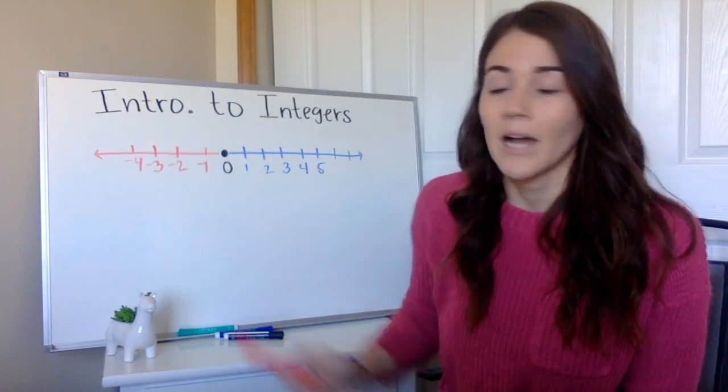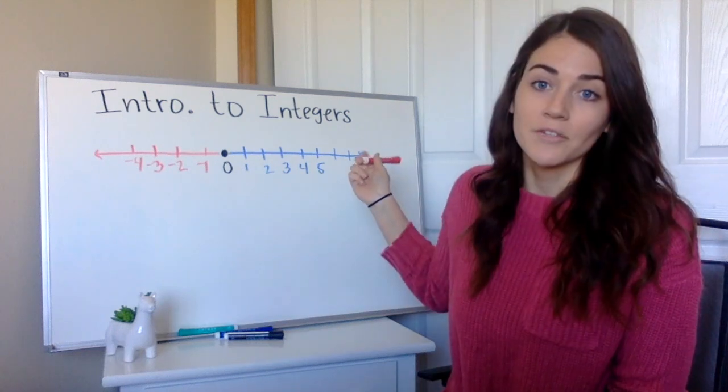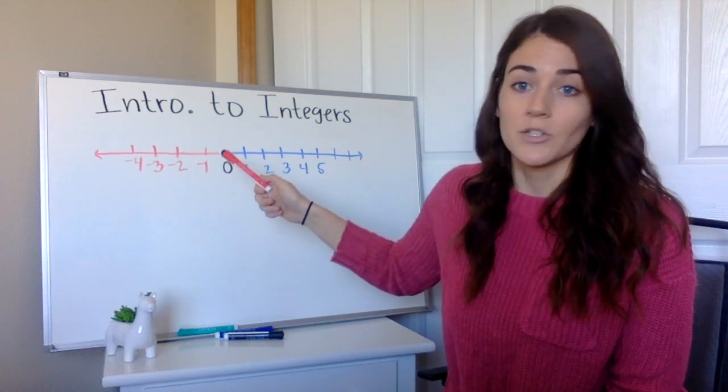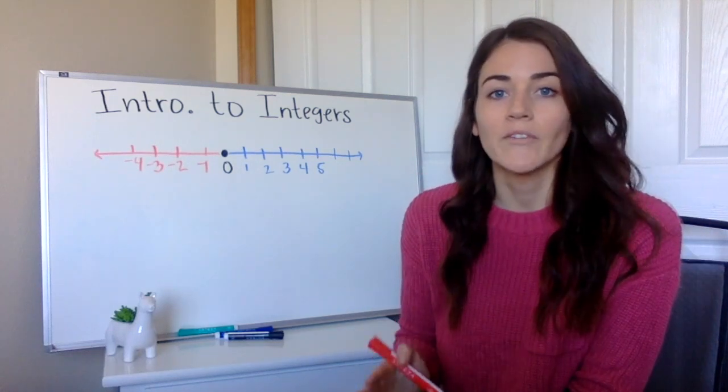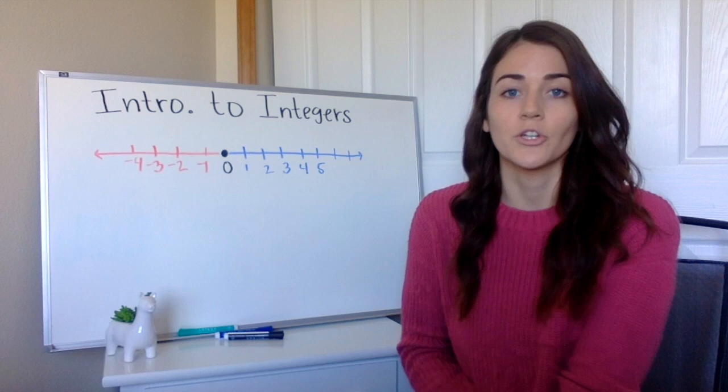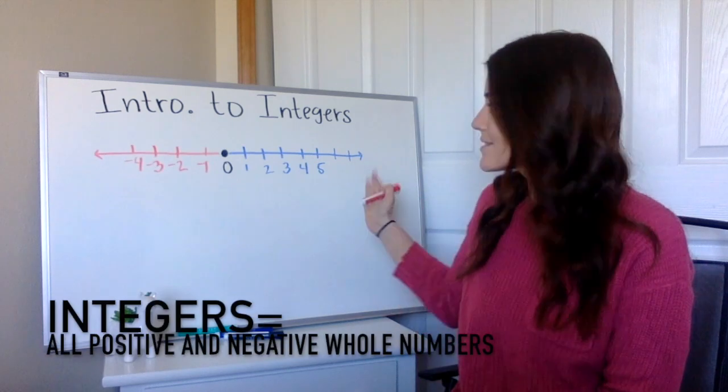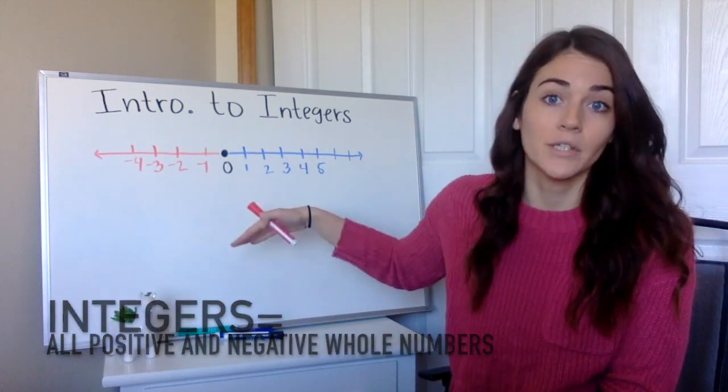Just like those counting numbers are going to go forever in the positive direction, your negative numbers are also going to go on forever in the negative direction. So notice I don't have any decimals or fractions or anything like that in there. So your integers are all of your positive and negative whole numbers.